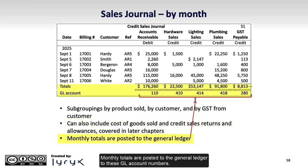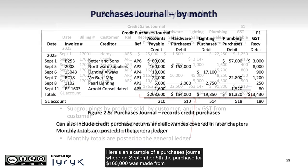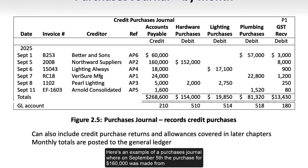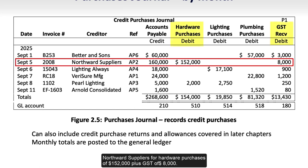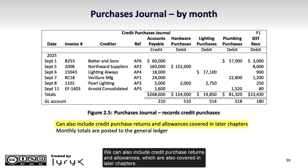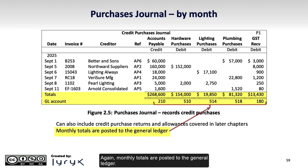Monthly totals are posted to the general ledger to these GL account numbers. Here's an example of a purchases journal, where on September 5th, a purchase for $160,000 was made from Northward Suppliers for hardware purchases of $152,000 plus GST of $8,000. We can also include credit purchase returns and allowances, which are also covered in later chapters. Again, monthly totals are posted to the general ledger.